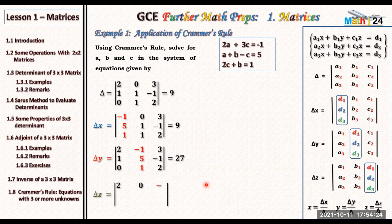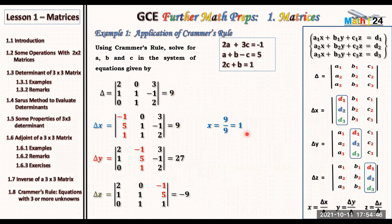For delta z, we replace the last column by −1, 5, 1. The determinant of z is equal to −9. Now in step three: x equals delta x over delta — that is 9 over 9, which equals 1. y equals delta y over delta — 27 over 9, which equals 3. z equals delta z over delta — minus 9 over 9, which equals −1.